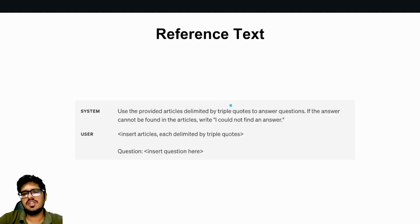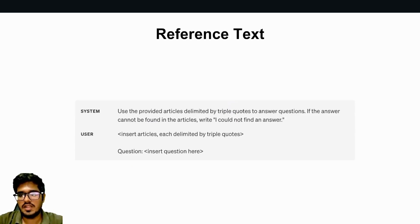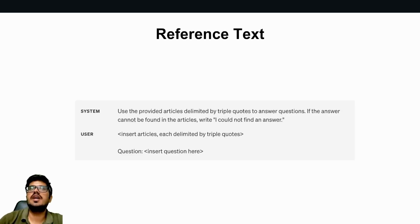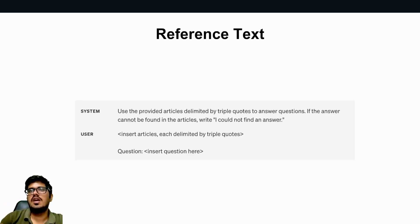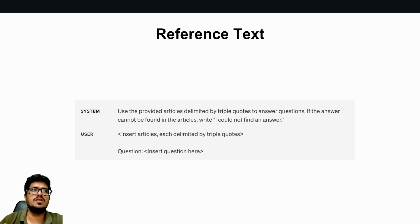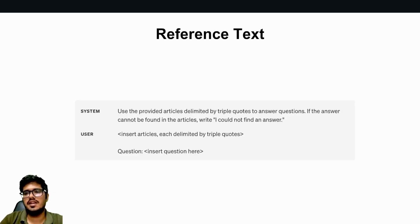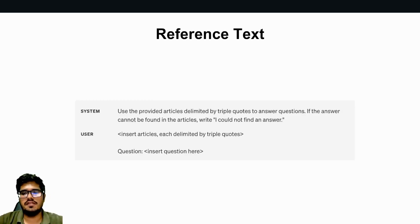The first example: 'use the provided articles delimited by triple quotes to answer questions; if the answer cannot be found in the articles, write that I could not find the answer.' That way it will only look through the articles and not give fabricated answers. This is also useful if you have a FAQ for your own product with a ChatGPT bot — you want the model to only look at your product documentation and not give out answers it already knows. You'd never want the model to lie to your potential customer.